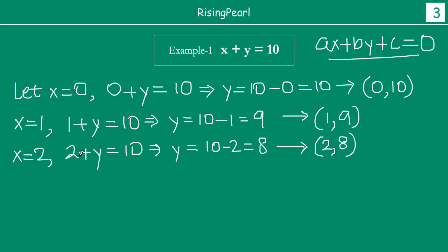You understand, friends — we can keep going: x = 0, 1, 2, 3, 4, 5, 6, and so on. We can take as many values as we want. Just for discussion, let us also take a negative value of x, say x equal to minus 3.